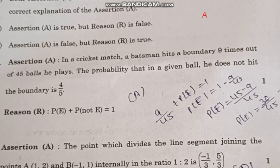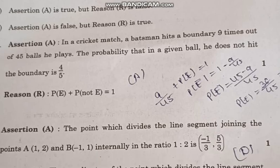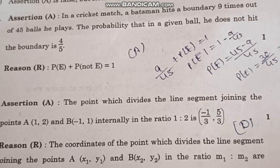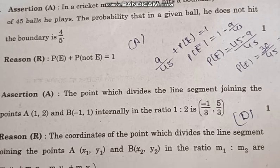Question number 19: Assertion - In a cricket match, the batsman hit a boundary 9 times out of 45 balls he played. The probability that in a given ball he does not hit a boundary is 4 by 5. Reason - Probability of an event plus probability of not an event equals 1. Correct answer option A, both A and R are true and R is the correct explanation of A.